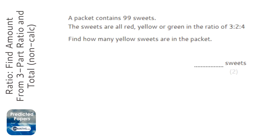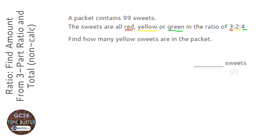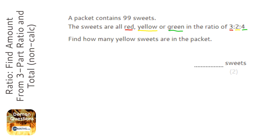The first thing to notice is the order of the colours in the question matches the order they are in the ratio. So step one with these is you imagine that we want to create three piles of red, two piles of yellow and four piles of green of these sweets, each pile having the same amount, and we're looking to see how much is in both yellow piles.